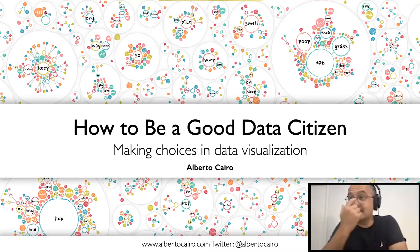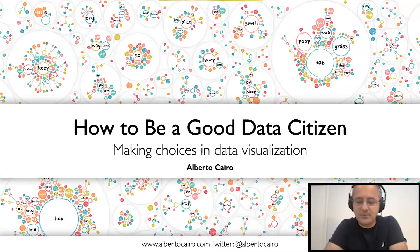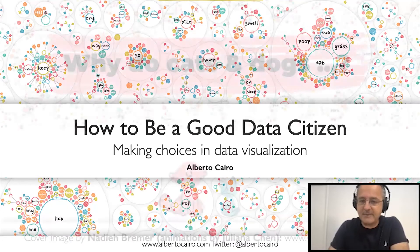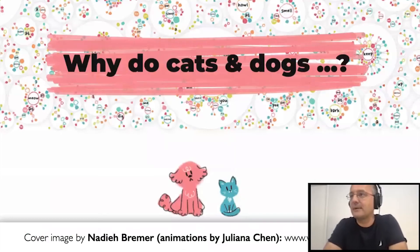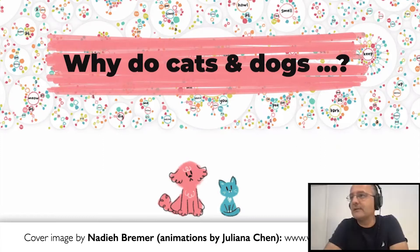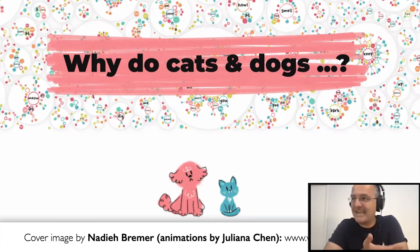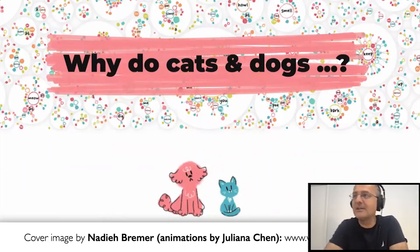Before I get started, I would like to give credit to the author of the images you will see on the opening slides of this slide deck. Those illustrations come from a project created by Nadi Bremer, who is a famous visualization designer, with the help of an illustrator called Juliana Chen. This project is titled "Why Do Cats and Dogs?" and if you enjoy creative interactive data visualization with an artistic edge, I would really recommend that you visit this project. It's a lot of fun and contains tons of data — it's based on Google data.